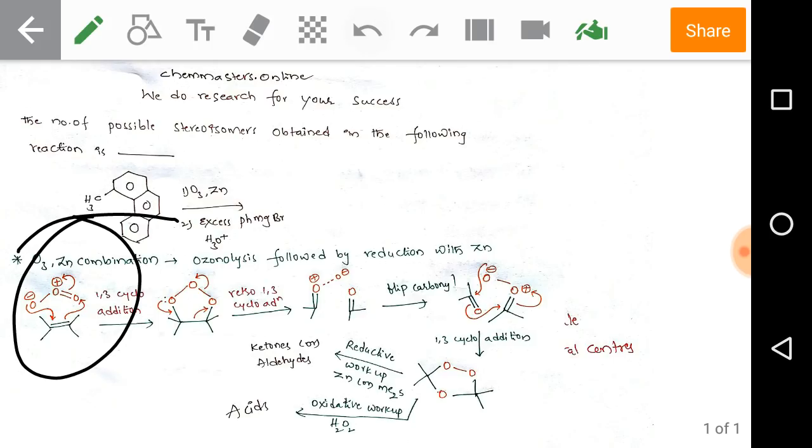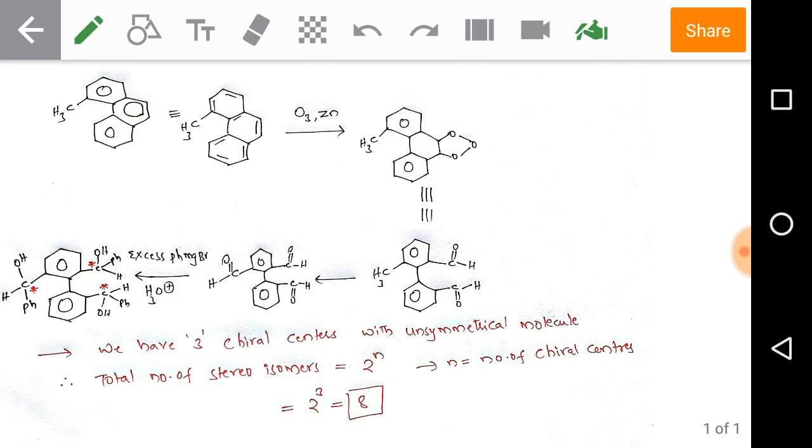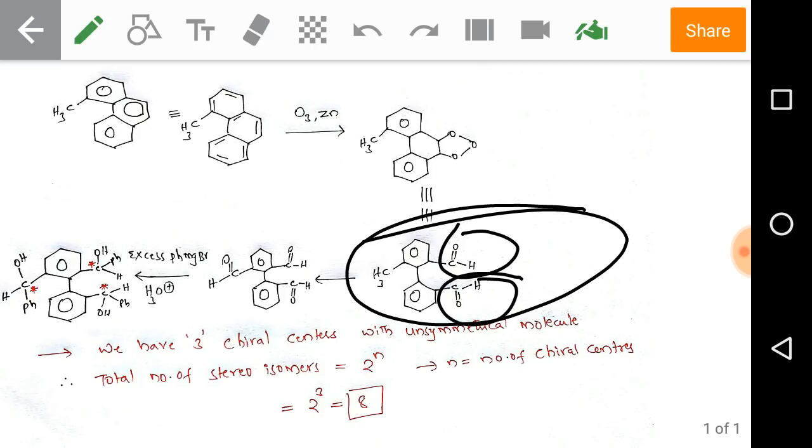Now come to the problem. Just look at the given substrate here, that means methyl phenanthrene. Ozonolysis I have given directly after ozonolysis and reduction with zinc. Just follow the mechanism of ozonolysis. Now we get two aldehydes.